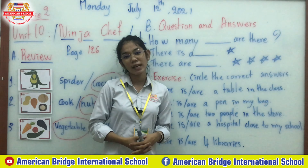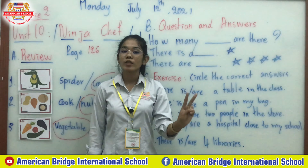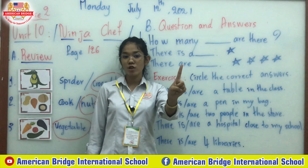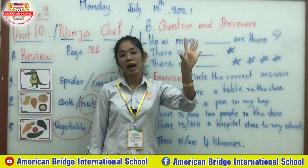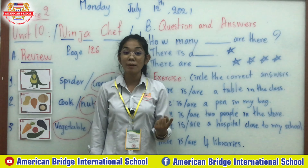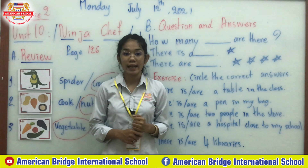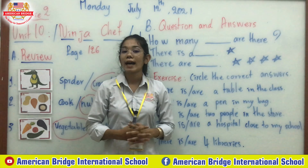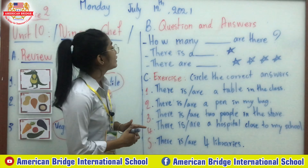If you have only one pen, you answer 'there is a pen.' If you have two pens, you answer 'there are two pens.' Remember: if the thing has only one, answer 'there is.' If the thing has more than one, answer 'there are.'